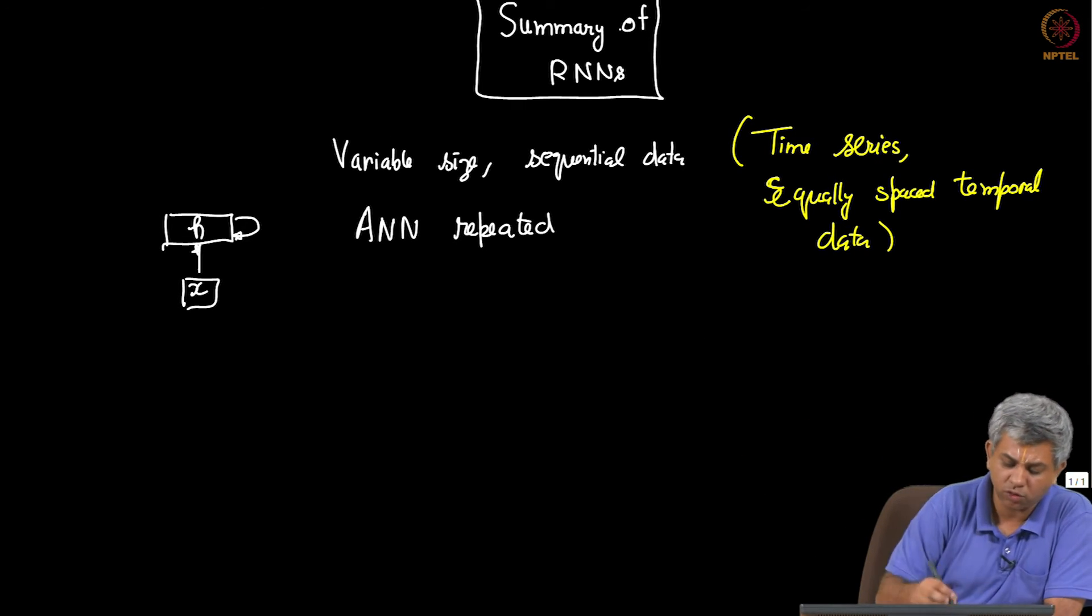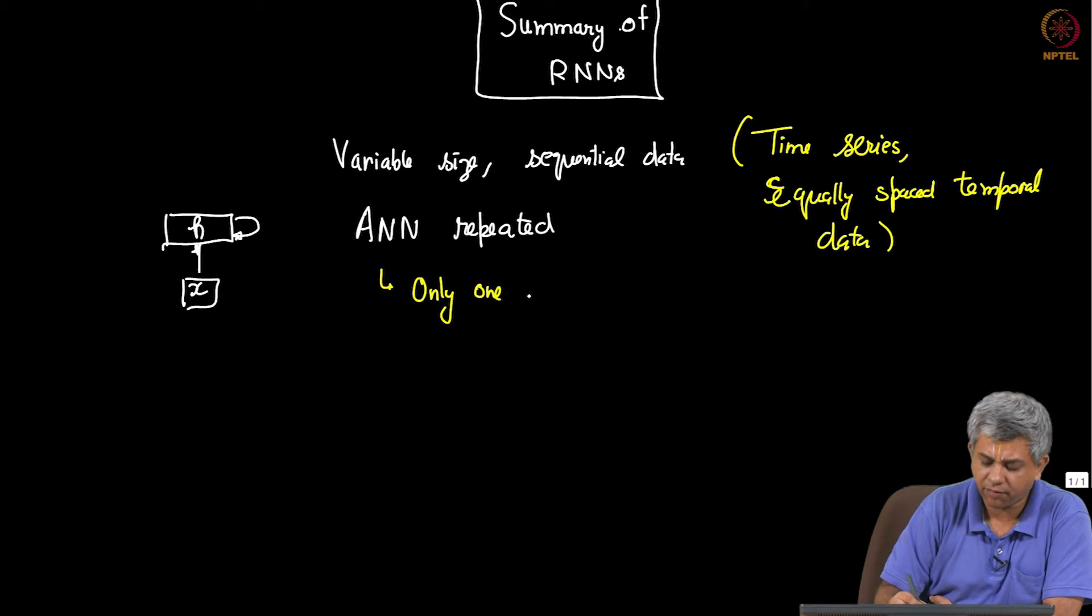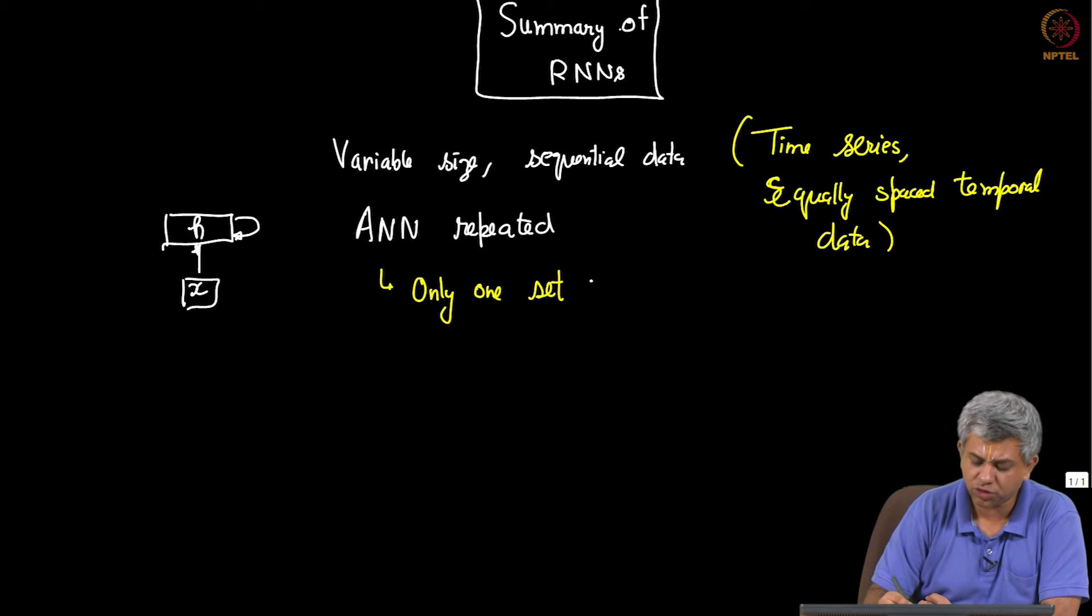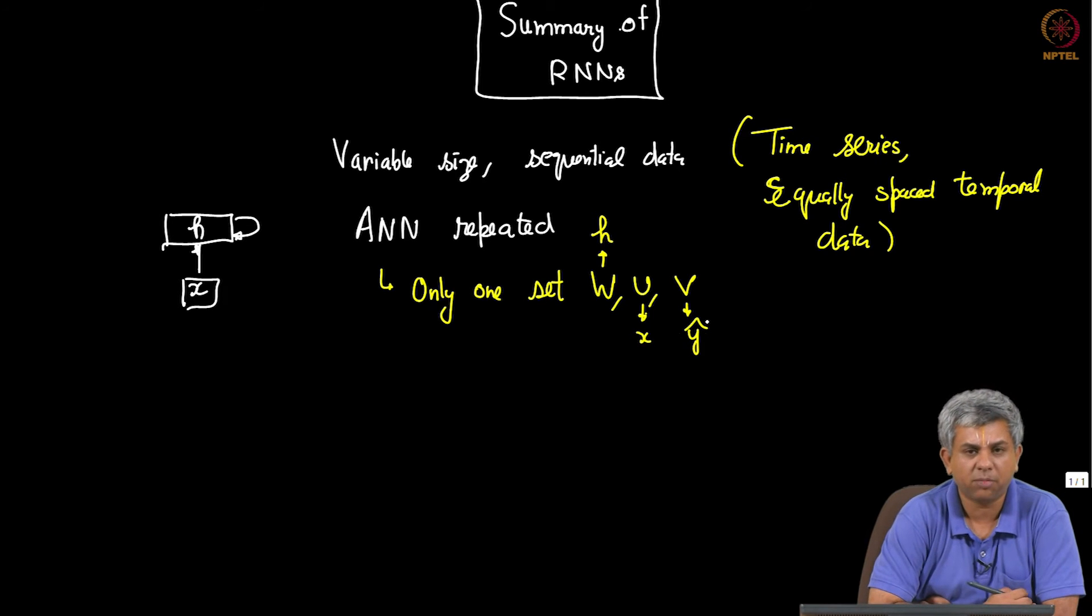We usually, if it is not deep, we use only one set of WUV. W denotes the connection with the previous H, U denotes the connection with X, and V denotes the connection with the final predictive layer.